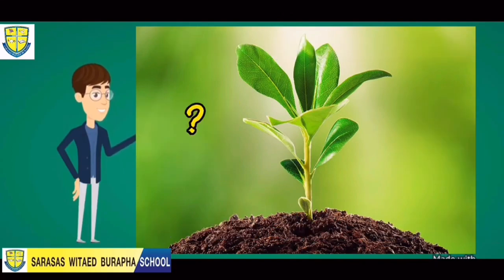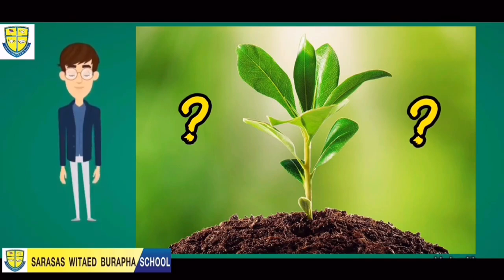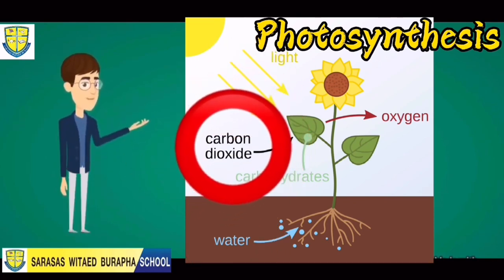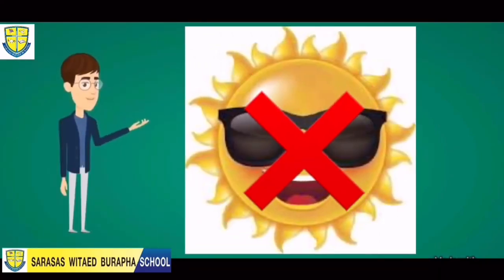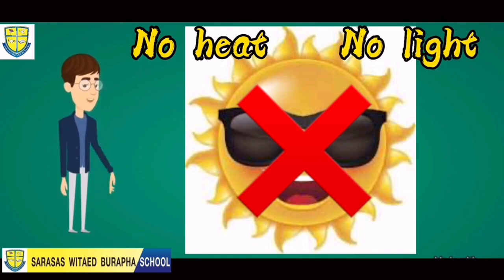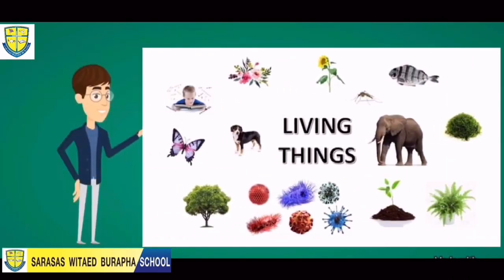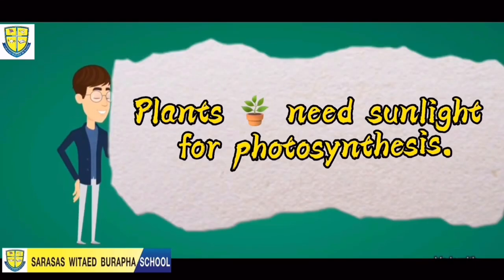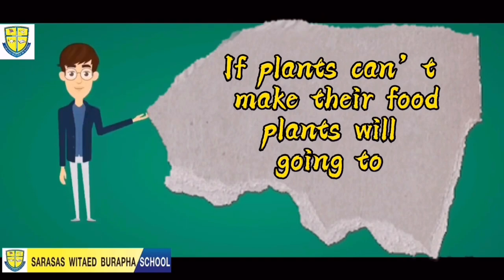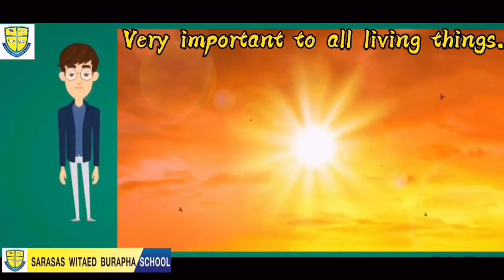What do we call this process? Do you still remember? Yes, it is photosynthesis — plants collect sunlight, water, and air to make their own food. Because without the sun, no one will produce heat and light, and most living things will die. Just like plants — plants need sunlight to make their own food, and if they can't make their own food, they are going to die. So sunlight is very important to all living things.